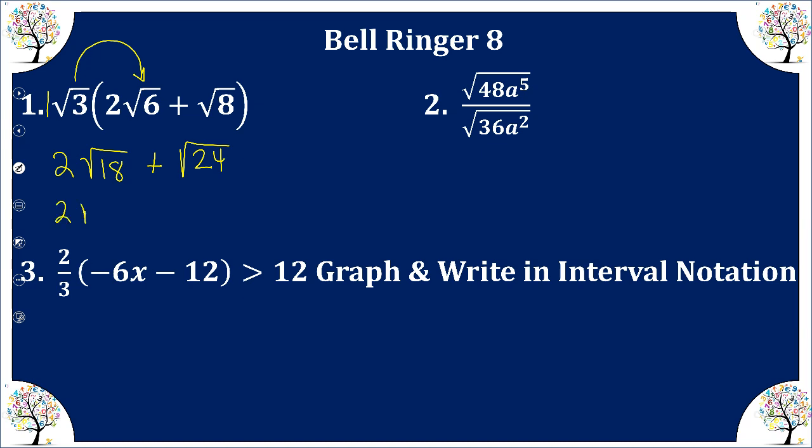Now let's simplify these to see if we can combine. We have 9 times 2 plus, and this is going to be 4 times 6. So I get the square root of 9 is 3. 3 times 2 is 6, radical 2, plus the square root of 4 is 2, radical 6. We cannot combine these, so this is the final answer.